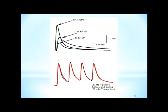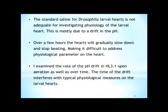I did an overlapping 20 Hz four pulses before and during 25 millimolar Trisma Acid. The black is the BES at 5 millimolar, and the red is the Trisma Acid, and they are almost identical. That means the Trisma Acid is as good as the BES at 5 millimolar.